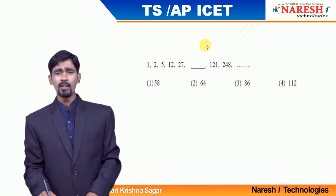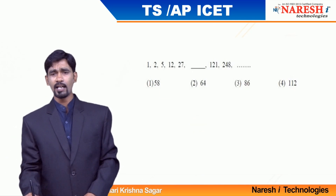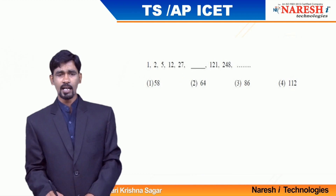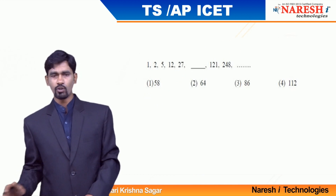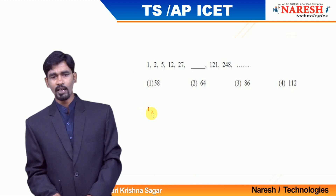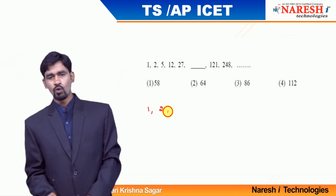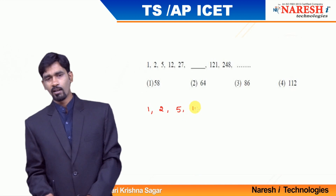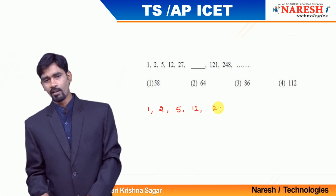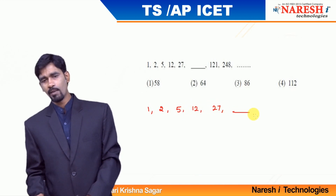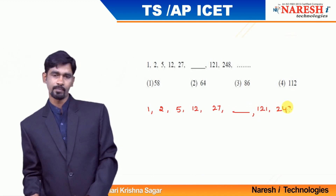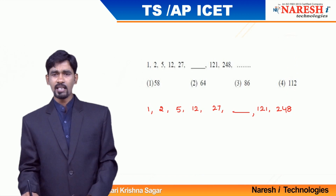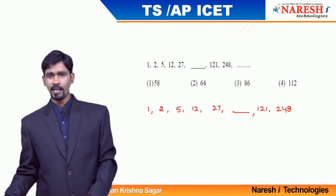By observing these numbers, the series starts with 1. Then 1 becomes 2, 2 becomes 5, 5 becomes 12, 12 becomes 27, and 27 — what is the missing term? The next known values are 121 and 248. By observing these numbers, I am trying to understand what is the logic here.